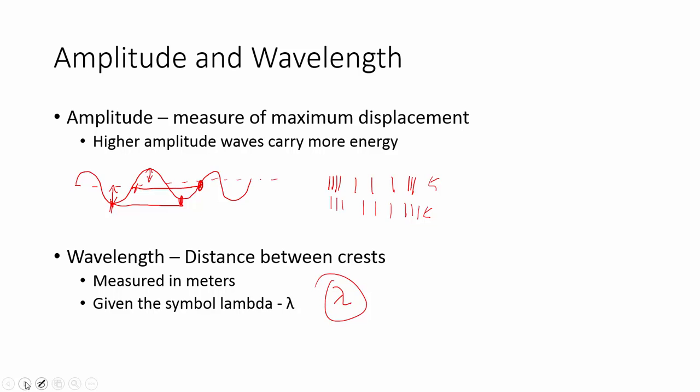Now, there's another property that we use to describe waves and that's called frequency. Frequency refers to how often something occurs. For a wave, it's how often a wave is produced or how many cycles occur in a second. So the rate at which waves are produced.